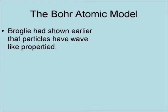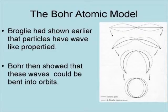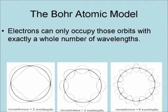The Bohr atomic model was based on the fact that de Broglie had shown earlier that particles such as electrons have wave-like properties. Bohr then showed that these waves could be bent into orbit, like those expected for an electron. Bohr further showed that electrons can only occupy those orbits with exactly a whole number of wavelengths.